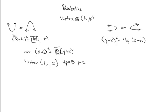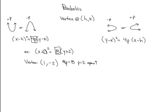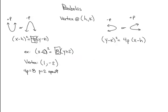We know it opens up or down. A positive P means it opens upward; a negative P means downward. For horizontal parabolas, positive P opens right, negative P opens left. So this one opens upward. I'm going to move this information and bring in a graph grid.